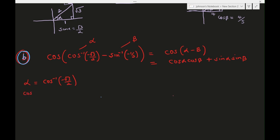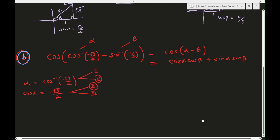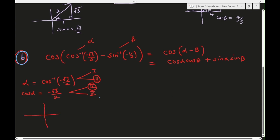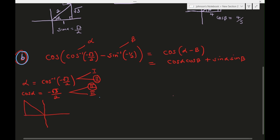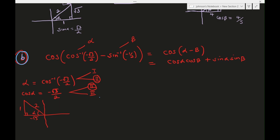Taking cosine of both sides, cosine alpha = −√3/2. The range of cosine inverse is 0 to π, so we are in the first or second quadrant. Since cosine is negative, we are in the second or third quadrant — the common one is the second quadrant. In the second quadrant: adjacent = −√3, hypotenuse = 2, and by Pythagoras theorem the opposite = 1.